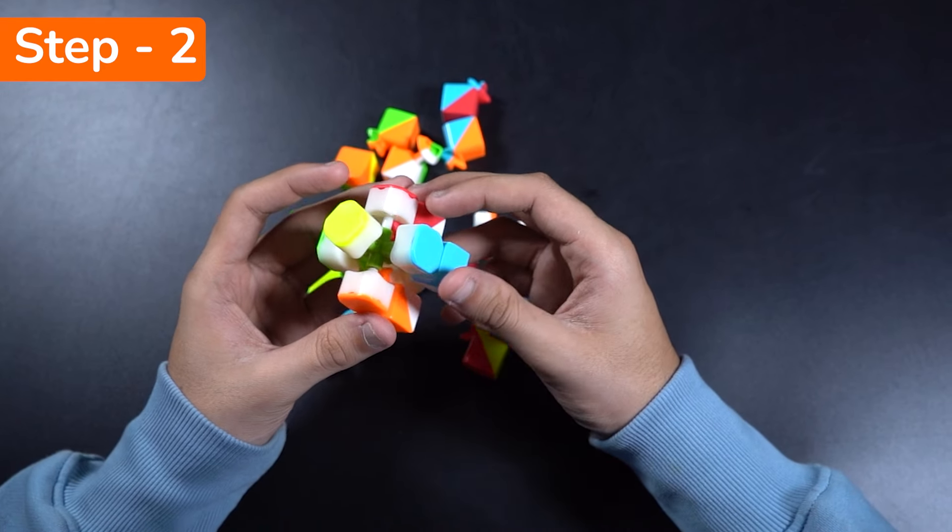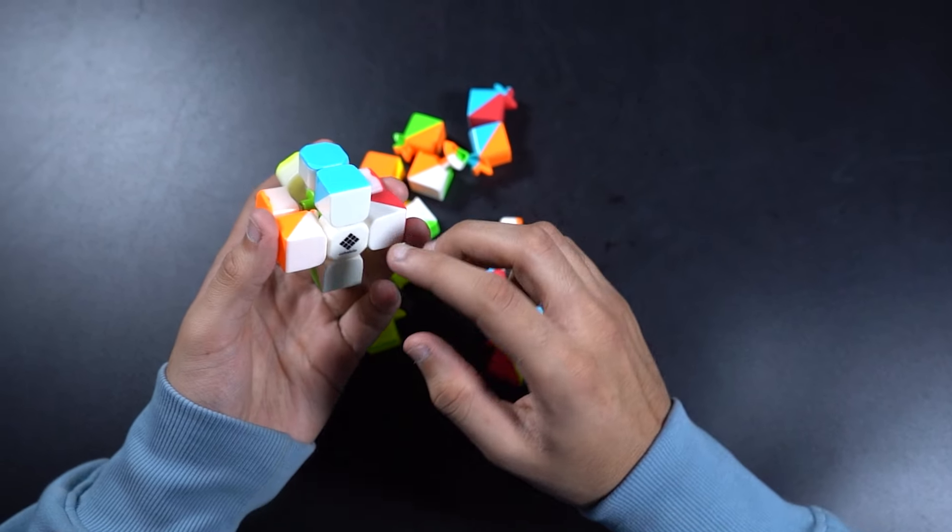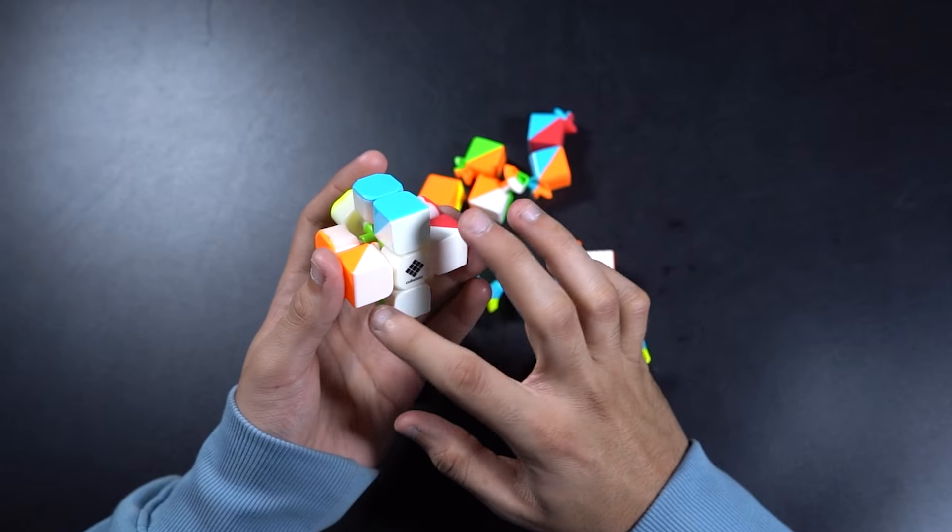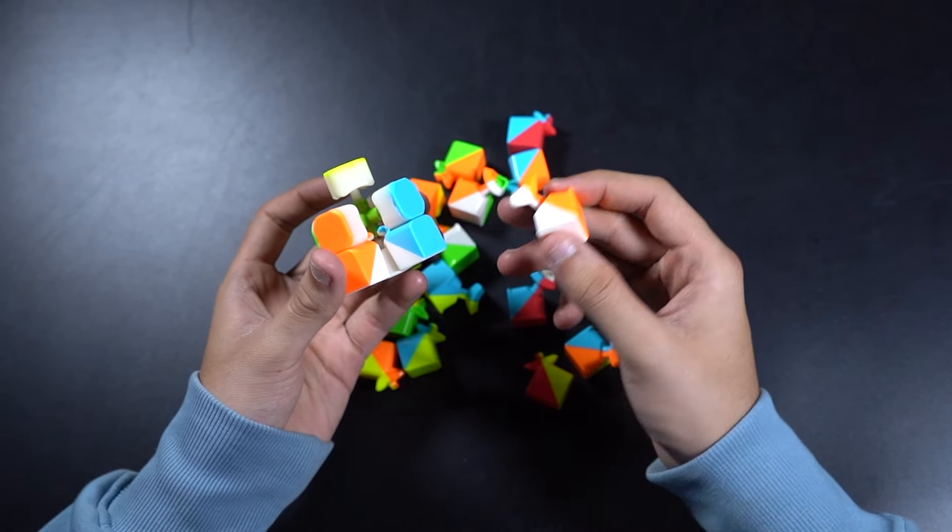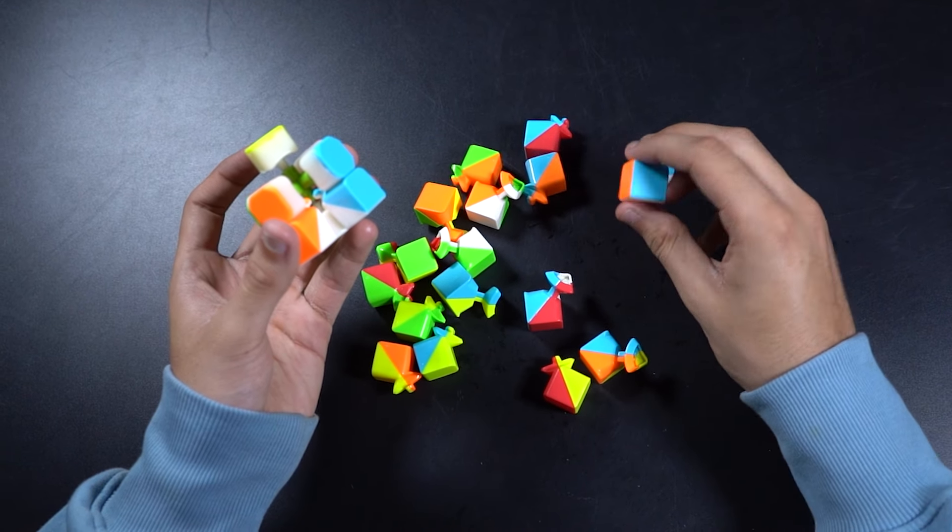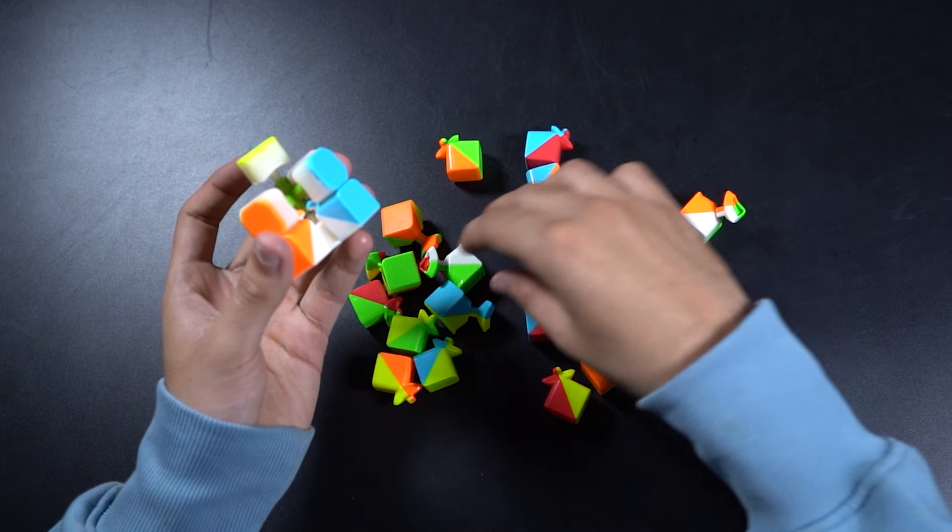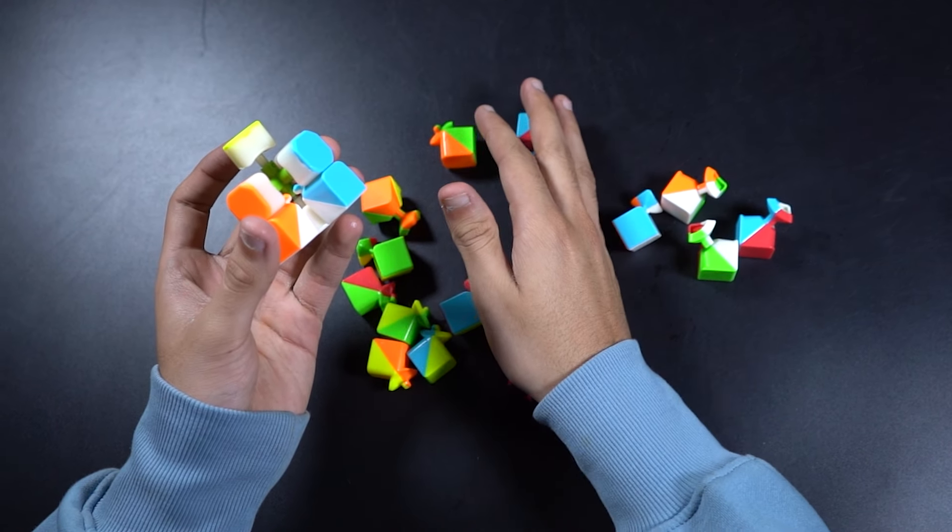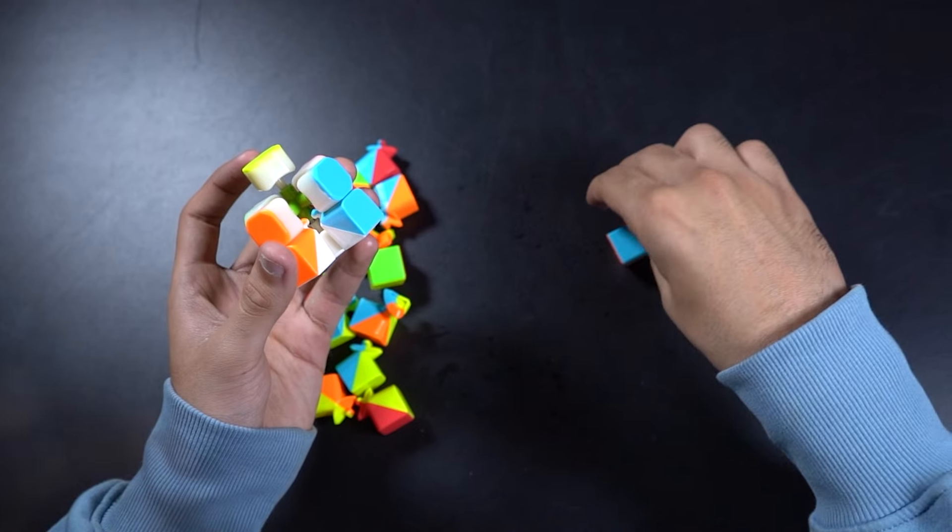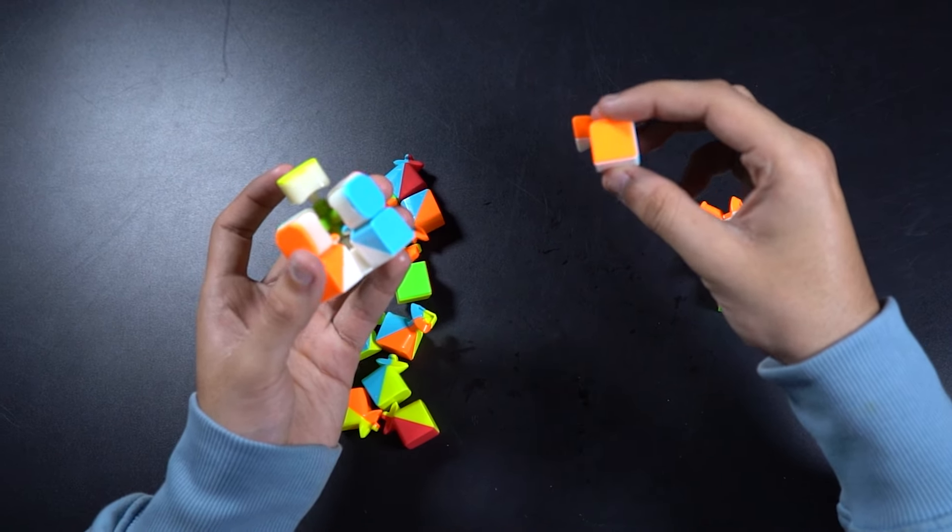So for the next step we're going to just put in the corners for the white base and we'll be done with the first layer after that. So here are the white corners. One over here, second over here, third over here and fourth over here. Put other pieces to the side and now let's put in these corners one by one.